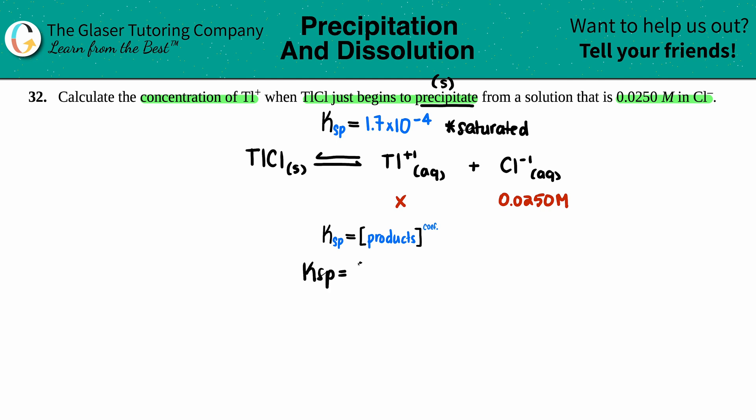So in this case, my Ksp is going to equal the concentration of TI+ times the concentration of Cl-. I don't need to raise them to any exponent because the coefficients for both TI and Cl are one and one.